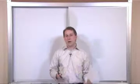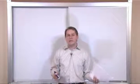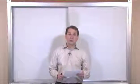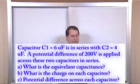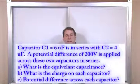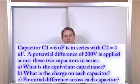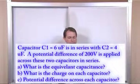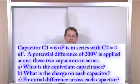I don't want to say these are really a whole lot more complicated, they're just different - you may have to do a little more thinking to figure out what to do. The first problem in this section goes like this: capacitor C1 of 6 microfarads is in series with capacitor C2 which is 4 microfarads, and a potential difference of 200 volts is applied across these two capacitors in series.